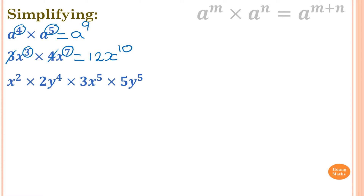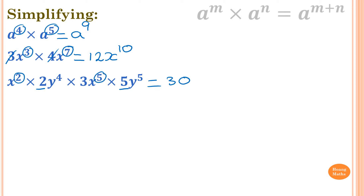x squared times 2y power of 4 times 3x to the power of 5 times 5y to the power of 5. First, multiply all the numbers together: 2 times 3 is 6, 6 times 5 is 30. Then for x: x squared times x to the power of 5 — we just add the indices, so 2 plus 5 is 7, giving x to the power of 7. For y: y to the power of 4 times y to the power of 5, so 4 plus 5 is 9, giving y to the power of 9. The answer is 30x⁷y⁹.